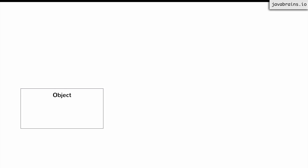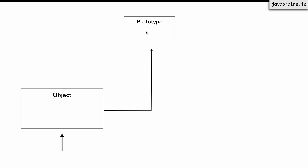In the last video, we learned that when we did property lookups on objects, if the object did not have the property that was requested, it was handing off the request to the prototype object and checking if the prototype object had the property you were looking for. If the object has it, it would return it. And if it doesn't have it, it would look up from the prototype — and if the prototype has the thing you're looking for, it would give it back as though the object itself had that property.